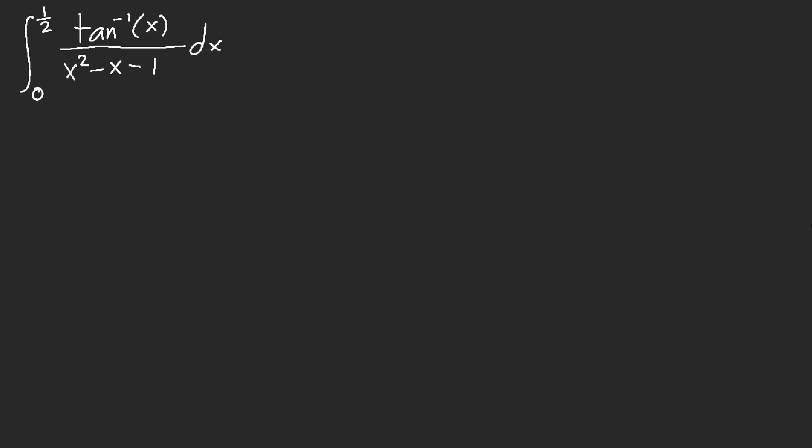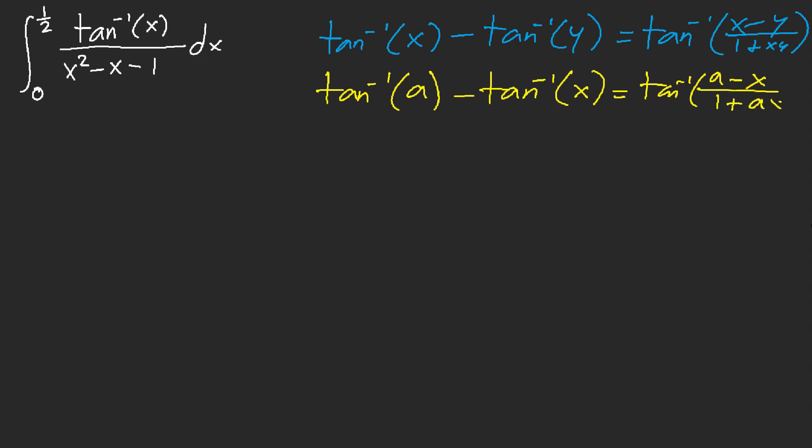So, what we're actually doing is we need to do something like inverse tangent of a minus inverse tangent of x equals a minus x over 1 plus ax. So, pretty much we want some number a, right? So, this cancels out with this. So, I get a minus x of 1 plus ax, right? But the thing is, what is a? What is a?